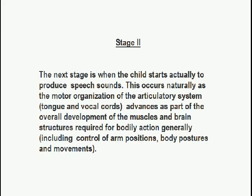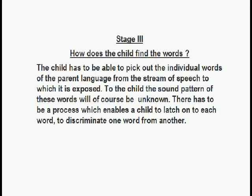Now we come on to stage two. The next stage is when the child starts actually to produce speech sounds. This occurs naturally as the motor organization of the articulatory system — that is, of course, the tongue and vocal cords and so on — advances as part of the overall development of the muscles and brain structures required for bodily action generally, including control of arm positions, body postures and so on.